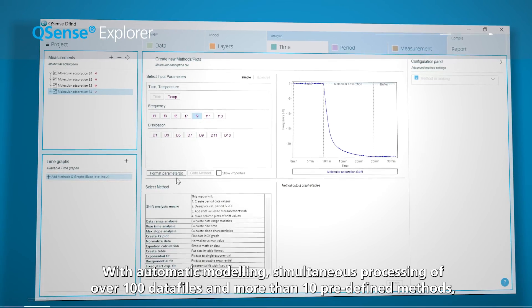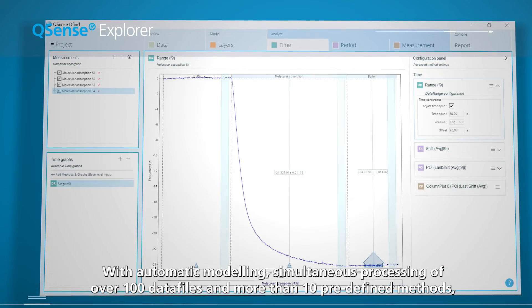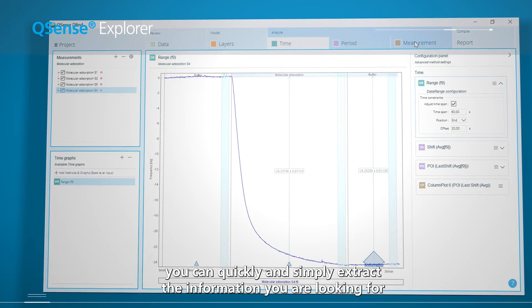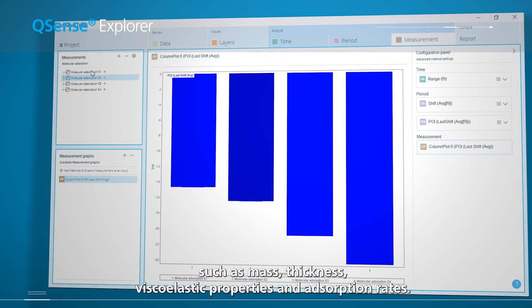With automatic modeling, simultaneous processing of over 100 data files and more than 10 predefined methods, you can quickly and simply extract the information you are looking for such as mass, thickness, viscoelastic properties and absorption rates.